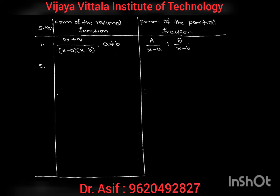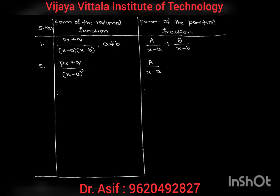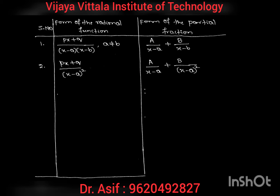The next rational function is Px plus Q divided by the square of a linear term, that is x minus A squared. Since we have power 2, we need two constants. We write A divided by x minus A plus B divided by x minus A whole squared.